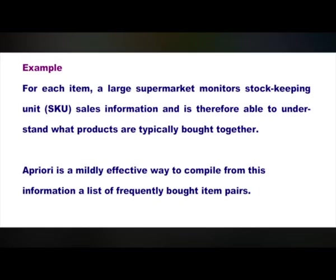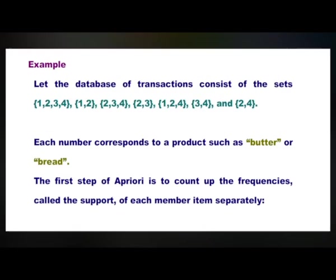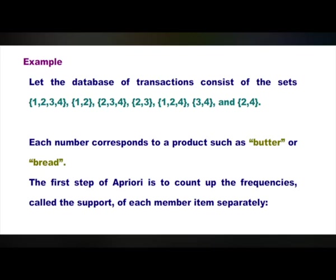For example, for each item, a large supermarket monitors stock-keeping units (SKU), sales information, and is therefore able to understand what products are typically bought together. Apriori is a mildly effective way to compile from this information a list of frequently bought item pairs. Let the database of transactions consist of the sets {1, 2, 3, 4}, next set {1, 2}, third set {2, 3, 4}, and fourth set {2, 3, 4}.